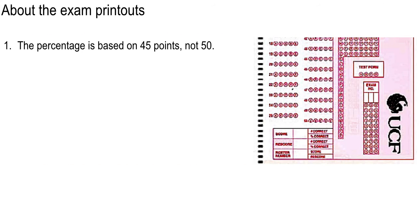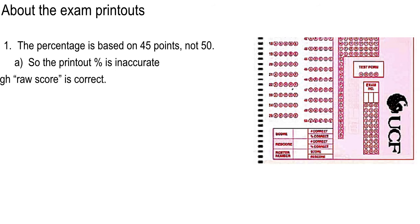The exam printouts are based on 45 points, not 50. The reason is that we had 45 Scantron questions, 45 dots to fill in. They don't know anything about our iClicker work, so the percentage on that printout is not accurate — that is not your test percentage. That's your Scantron percentage. The raw score at the top of your printout is correct; it tells you the number of points you got from the Scantron portion.